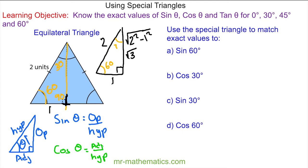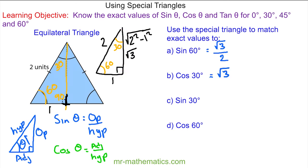Now we can use these three lengths and the angles of 60° and 30° to find exact solutions. The sine of 60°: looking at the 60° angle, the opposite side is √3 and the hypotenuse is 2, so sin 60° = √3/2. The cosine of 30°: the adjacent side is √3 and the hypotenuse is 2, so cos 30° = √3/2.